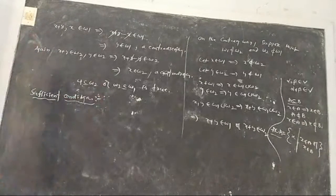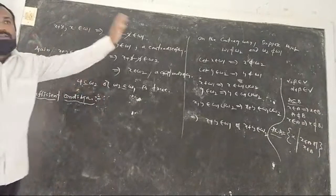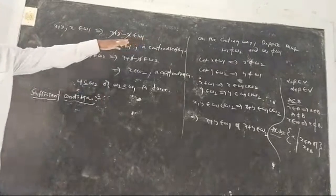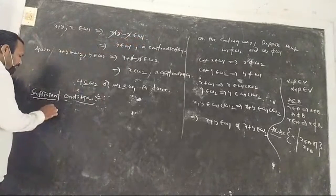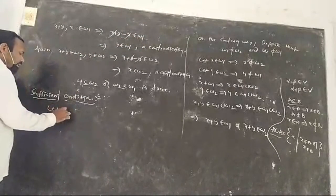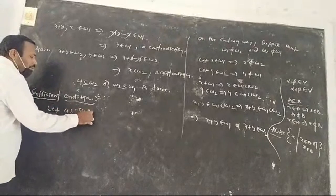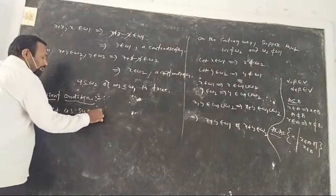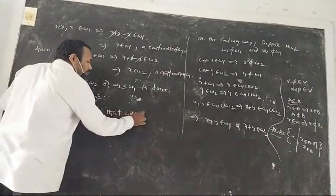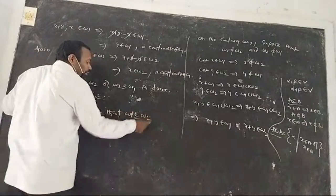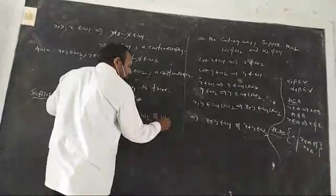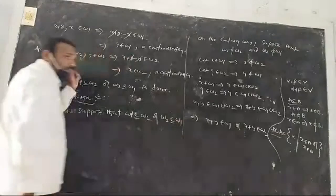In the sufficient condition, we suppose the right-hand side statement. Let us suppose that W1 is a subset of W2 or W2 is a subset of W1.